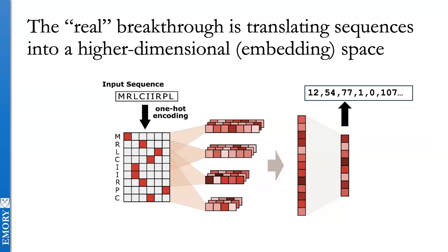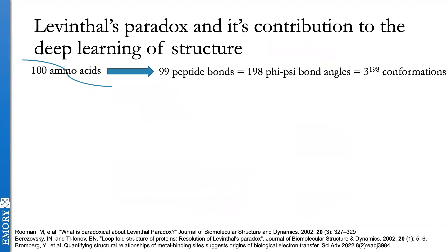The bottom line is that you can go from a sequence arrangement to a number arrangement representing a particular sequence. Now let me take you back to what I think is the reason why this particular approach works for protein structure prediction. There was Cyrus Levinthal in 1969, who identified what is now called Levinthal's paradox.